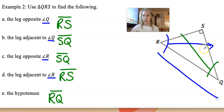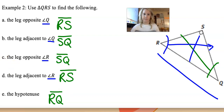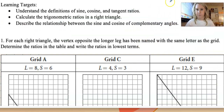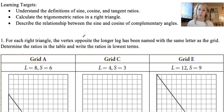As always, opposite the 90 is going to be your hypotenuse. So now we're going to move on to trig with new learning targets: understand the definition of sine, cosine, and tangent; calculate trigonometric ratios in a right triangle; and describe the relationship between sine and cosine of complementary angles.